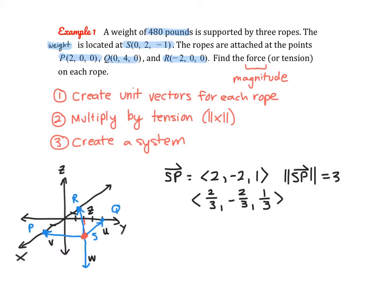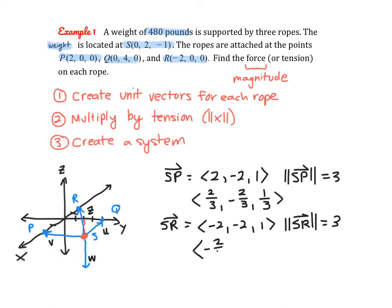Now for vector SR, the terminal point is (-2, 0, 0) with the same initial point. The component vector is (-2, -2, 1), and the magnitude is also 3. So the unit vector is (-2/3, -2/3, 1/3).